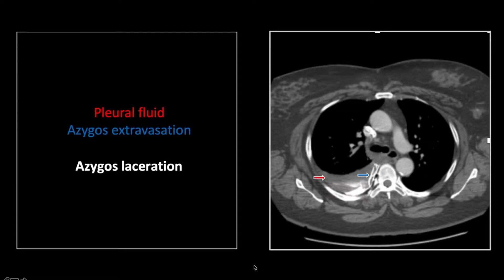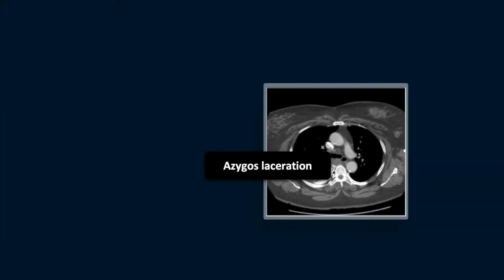The brisk bleeding apparently depicted here is obviously of concern. The surgical correction of this injury went quite well and this patient survived. Unfortunately, in following this up, I discovered that she died of a pulmonary embolism about four months after this event — repercussions one might not have guessed.